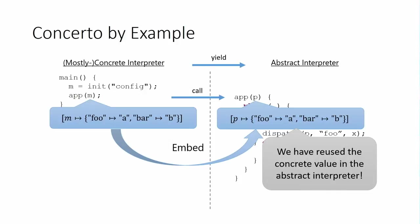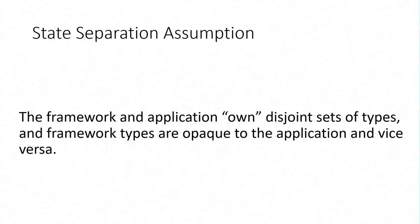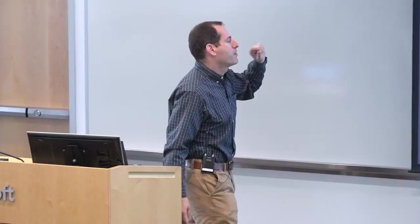We make our second key assumption, and I promise this is two of two, that the framework and the application own disjoint sets of types. The framework types are opaque to the application, and the application types are opaque to the framework. Of course, you have to handle library types like integers and stuff like that, but I don't have to do that in this talk. The framework types are manipulated only in the framework, and similar for the application types. We call this the state separation assumption. The framework and the application own disjoint sets of types.